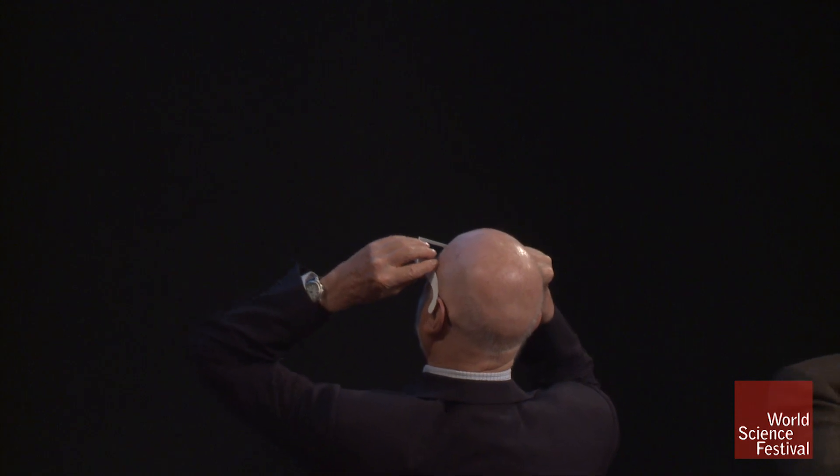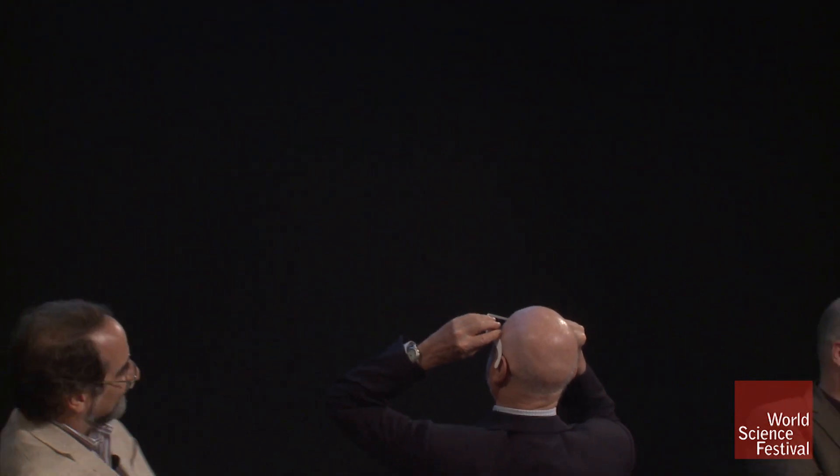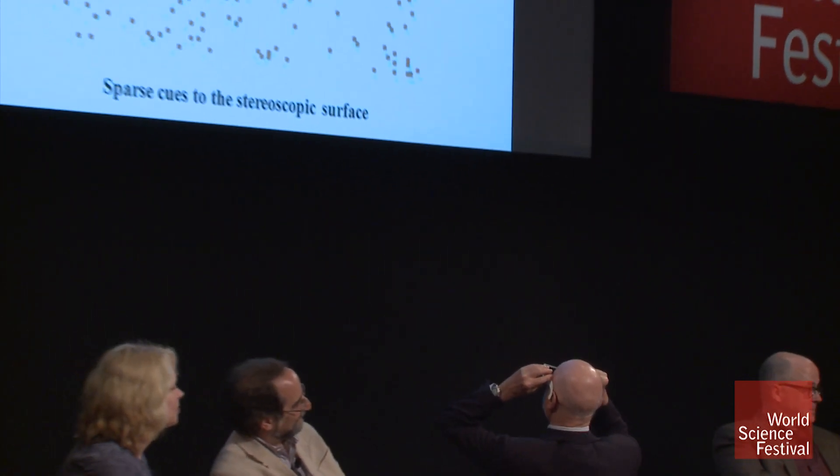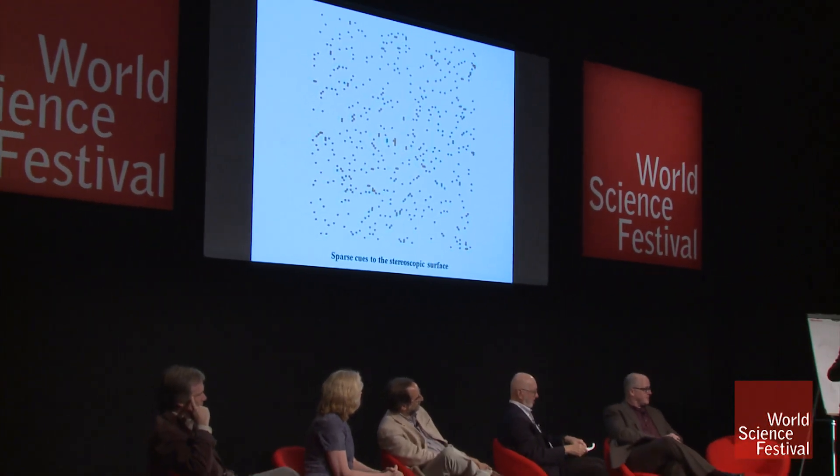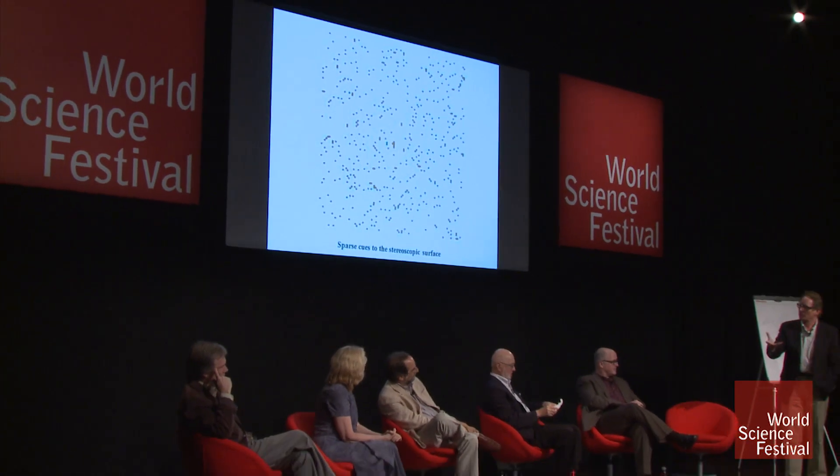This is a problem that I've been working on: how do we see the full surface structure from sparse cues? I want to try and show you what I've been thinking.